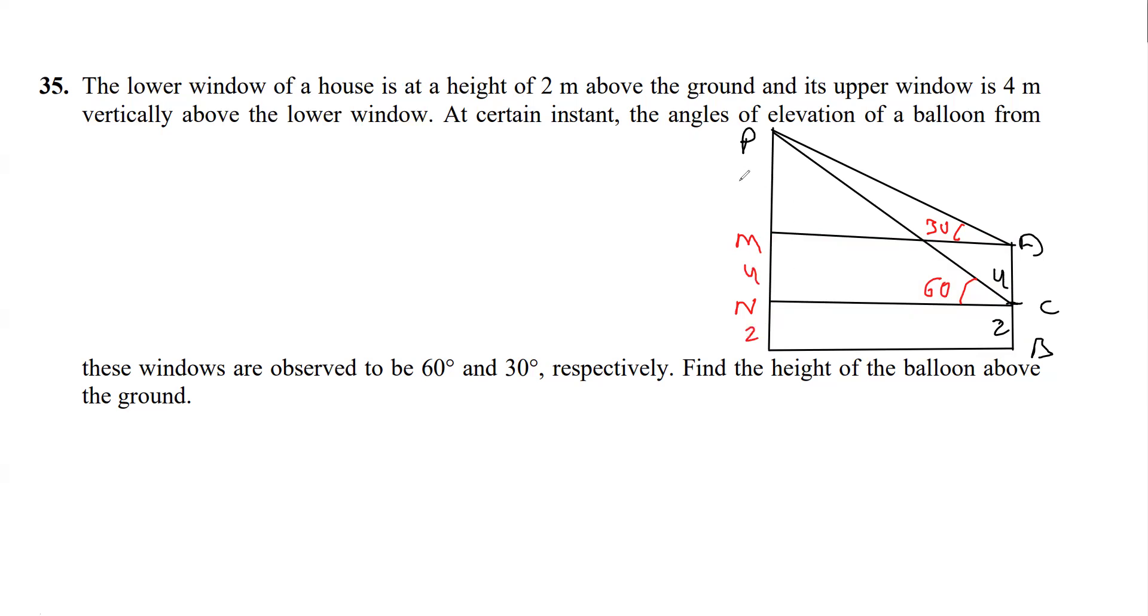Now we can see from here that AM is equal to CN, so first I'll calculate AM. AM is in this right angle triangle.